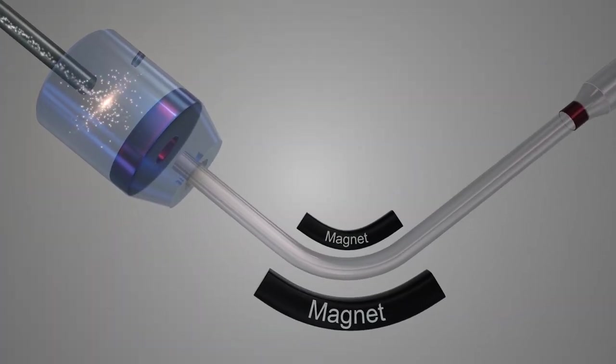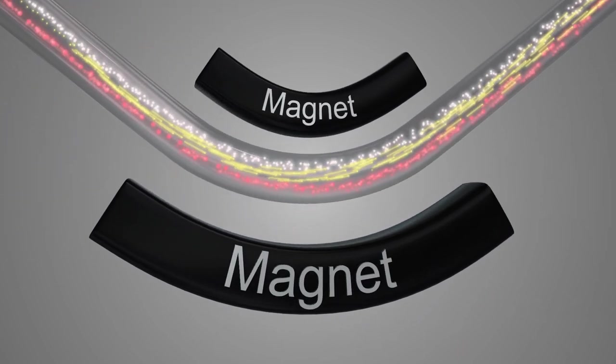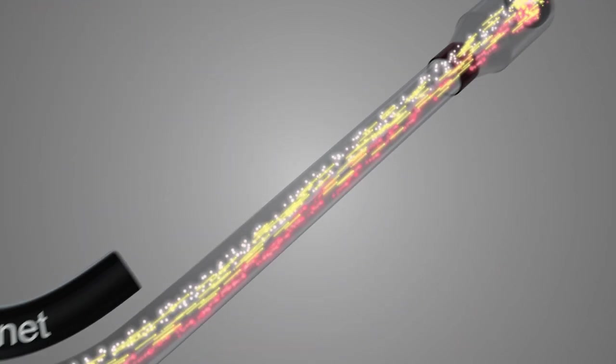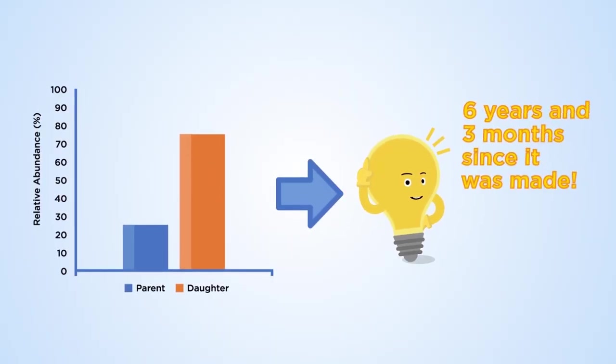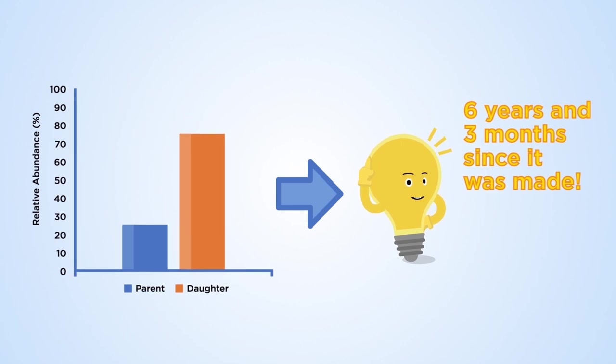Most commonly, mass spectrometers are used to precisely measure how much parent and daughter isotopes are present, allowing scientists to calculate the radioactive decay in the sample and, in turn, when something happened to the sample.